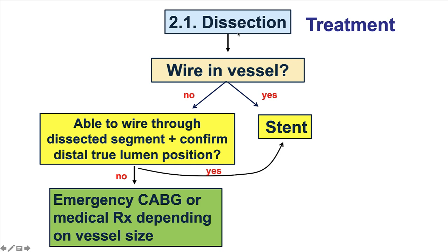What to do if dissection occurs? The key question is whether there is a wire in the vessel. If there is, the treatment is a stent. If not, one should try to wire through the segment and confirm that the wire is actually in the distal true lumen. If it is, then stenting is performed. If not, and the patient has a small vessel with dissection, conservative management may be appropriate. But if it is a major vessel, emergency coronary bypass may be required.